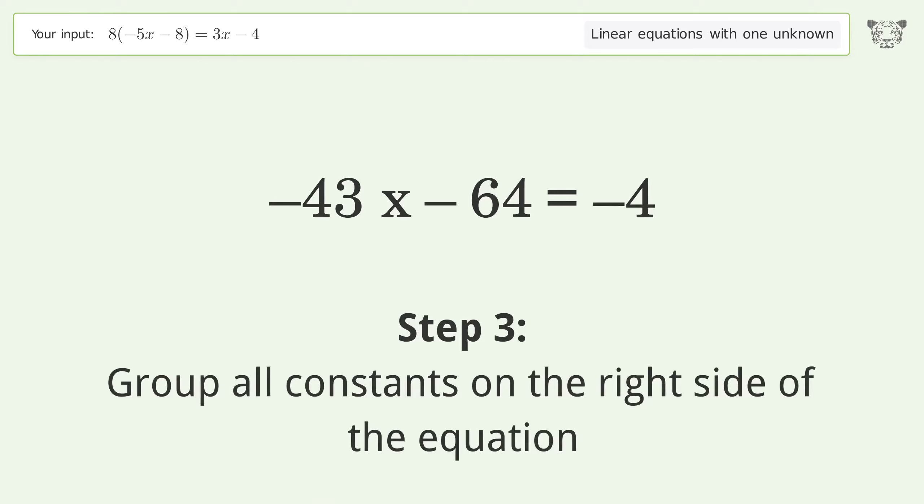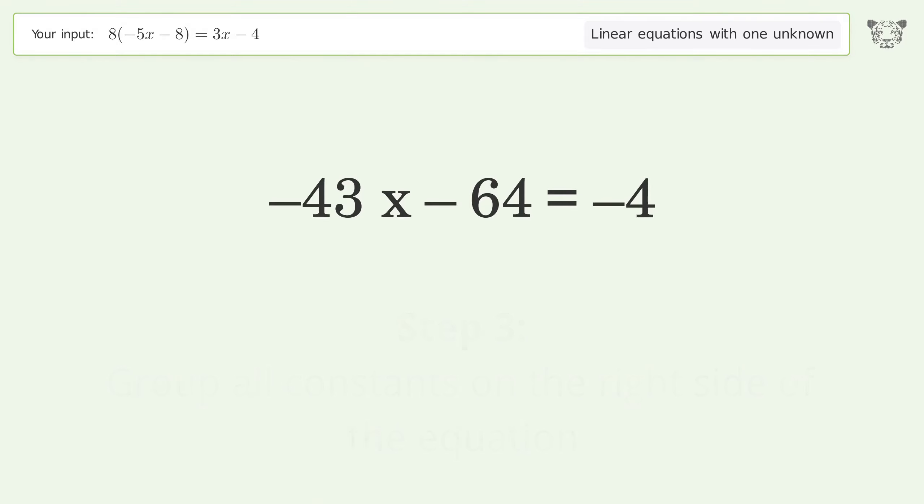Group all constants on the right side of the equation. Add 64 to both sides. Simplify the arithmetic.